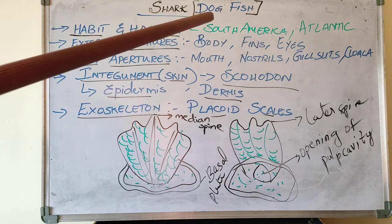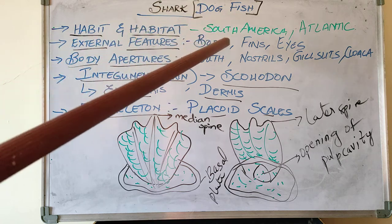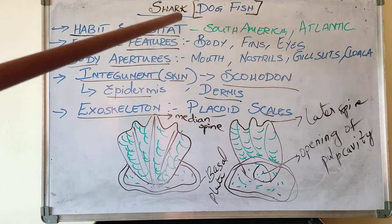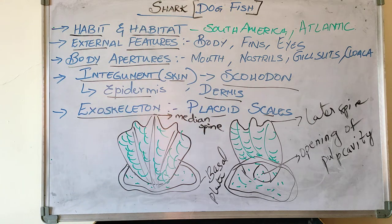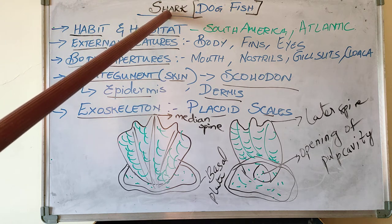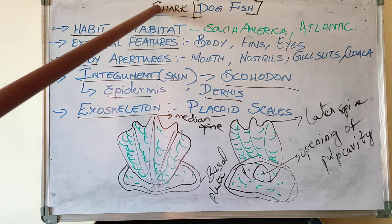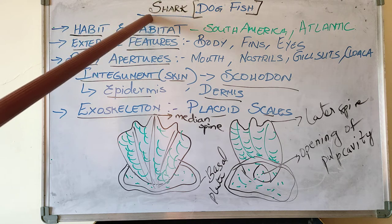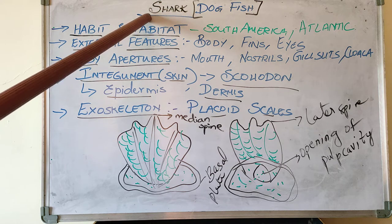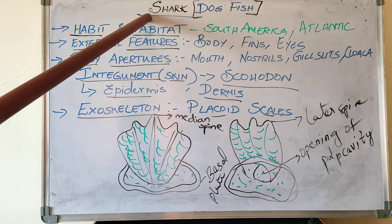Shark is also called as dogfish or scoliodon. Now coming to its classification: shark belongs to phylum Chordata, subphylum Vertebrata, subclass Elasmobranchii, and class Chondrichthyes. The common name is scoliodon.